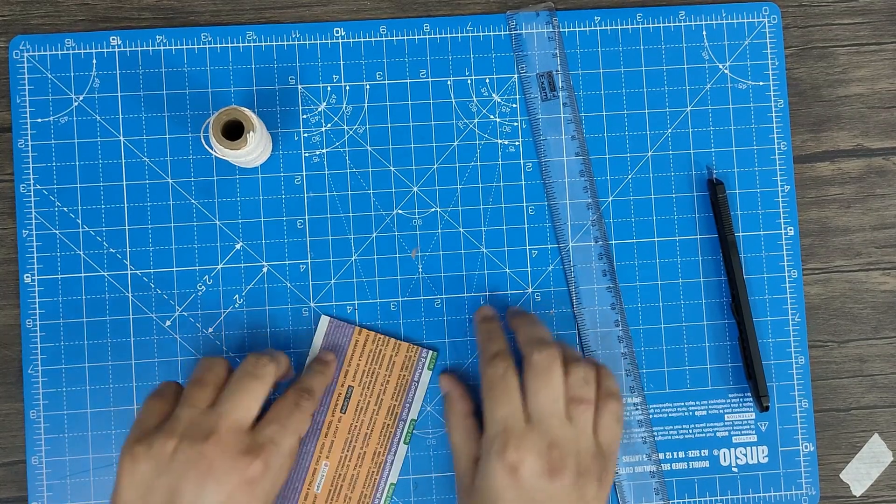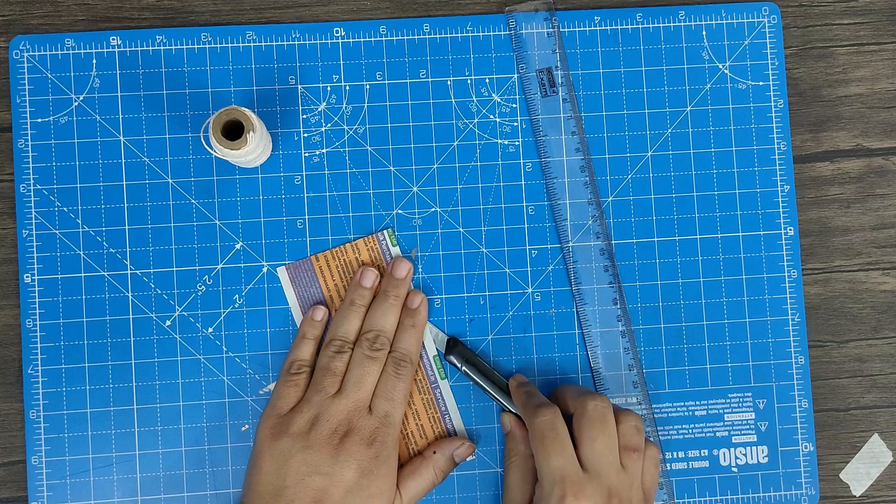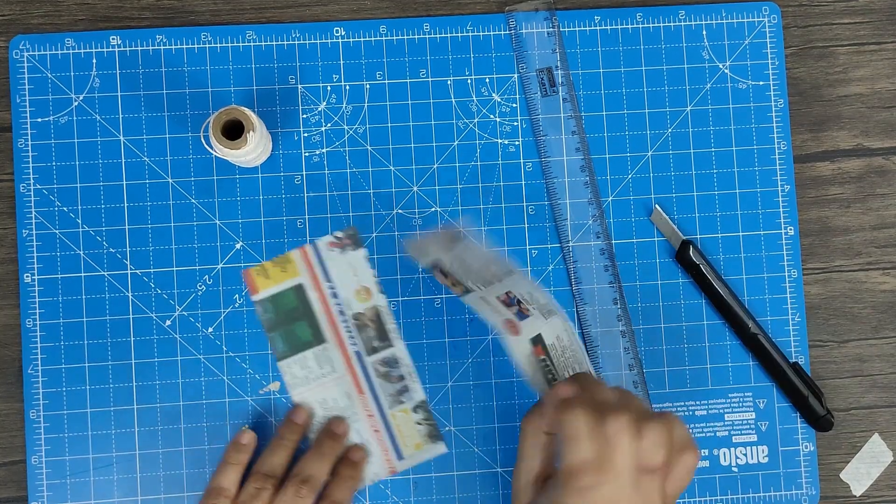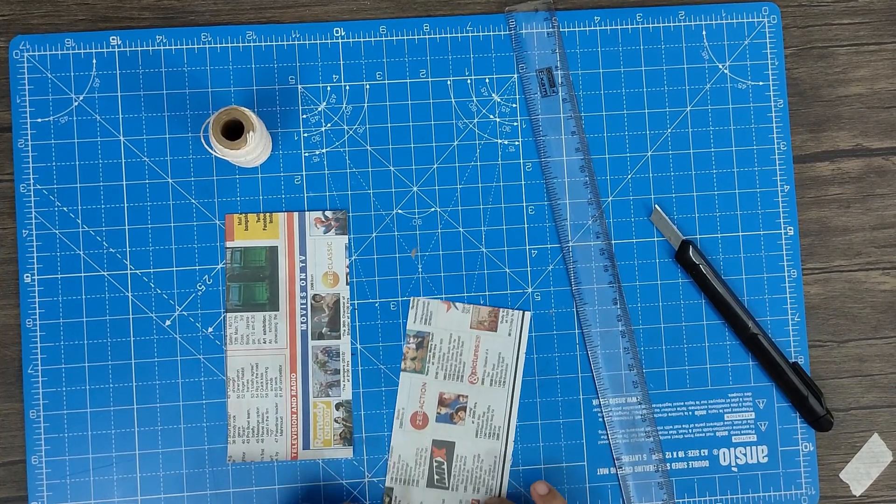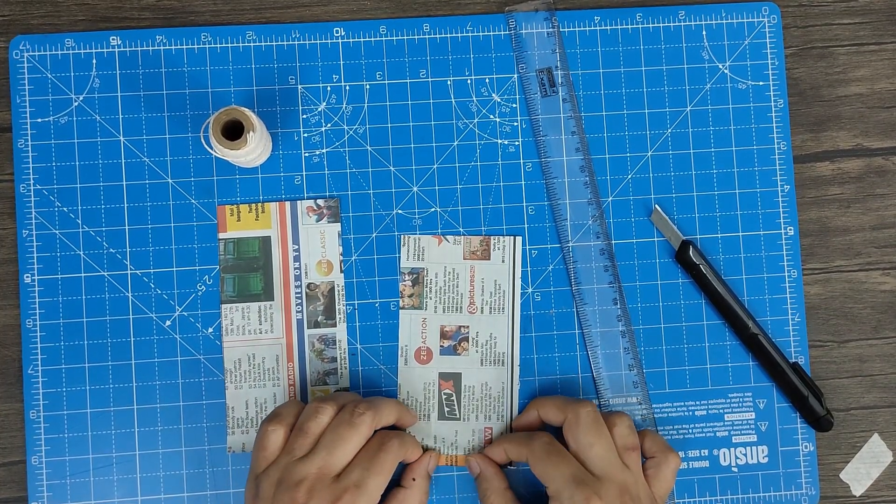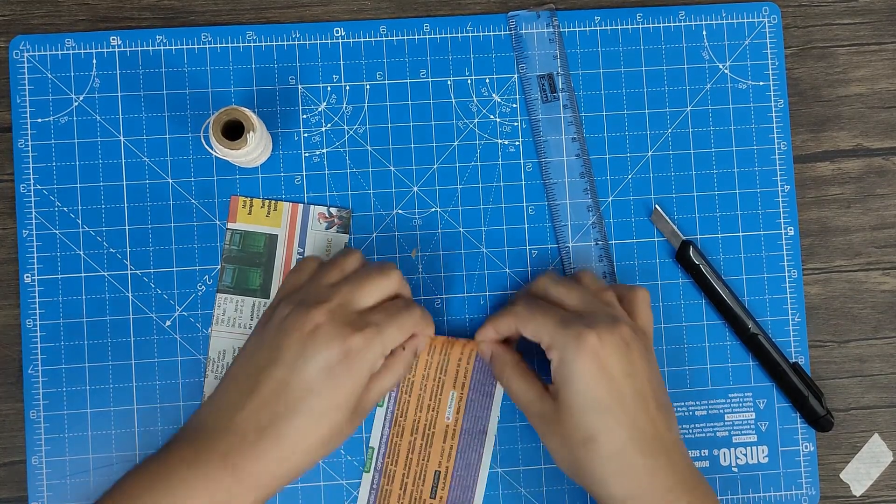Fold it in half and cut it, so now you have two halves. For one half, we'll just fold it like this.